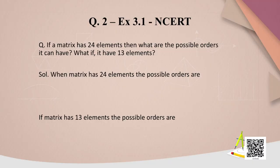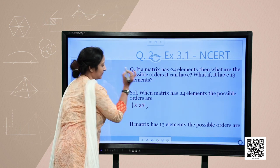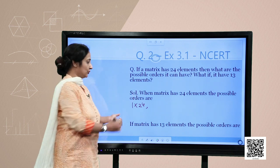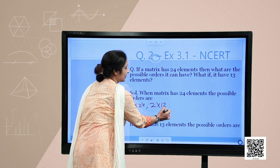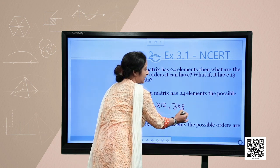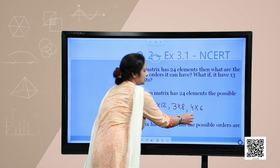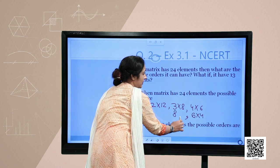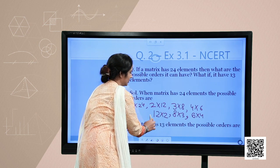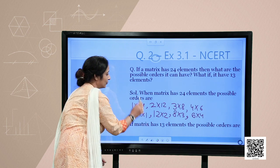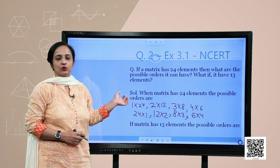The next question: if a matrix has 24 elements, what are the possible orders it can have? Basically we write the factor pairs of 24. The possible orders are 1×24, 2×12, 3×8, 4×6, and their reverses: 6×4, 8×3, 12×2, and 24×1. So there are 8 different possible orders for this matrix.